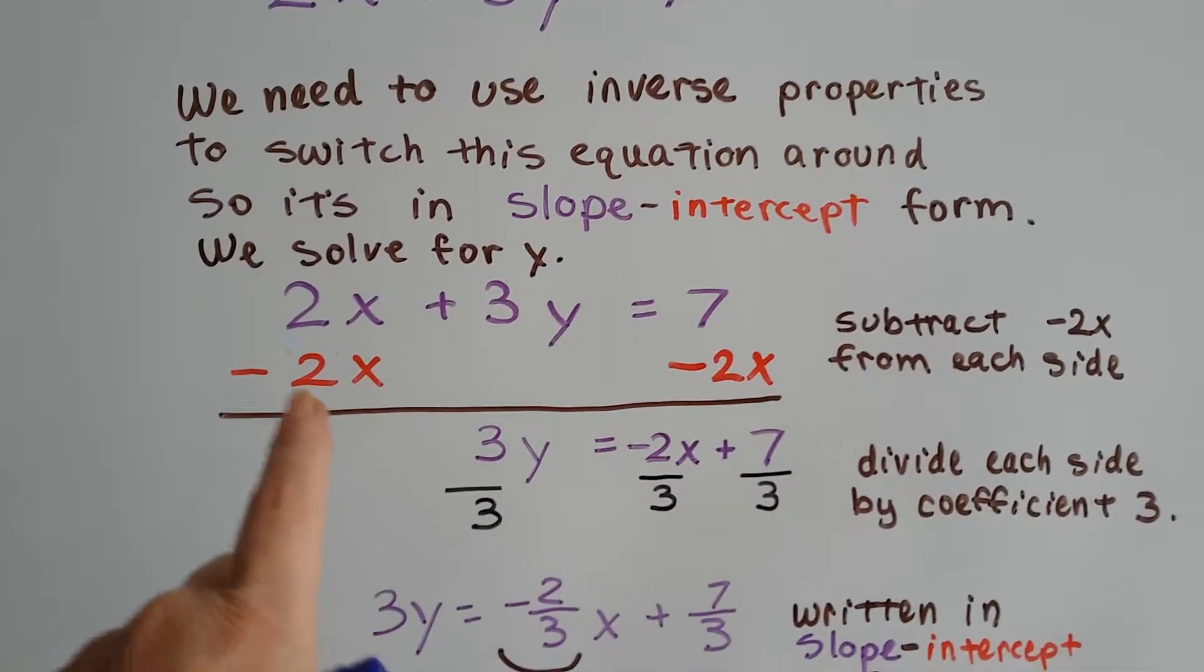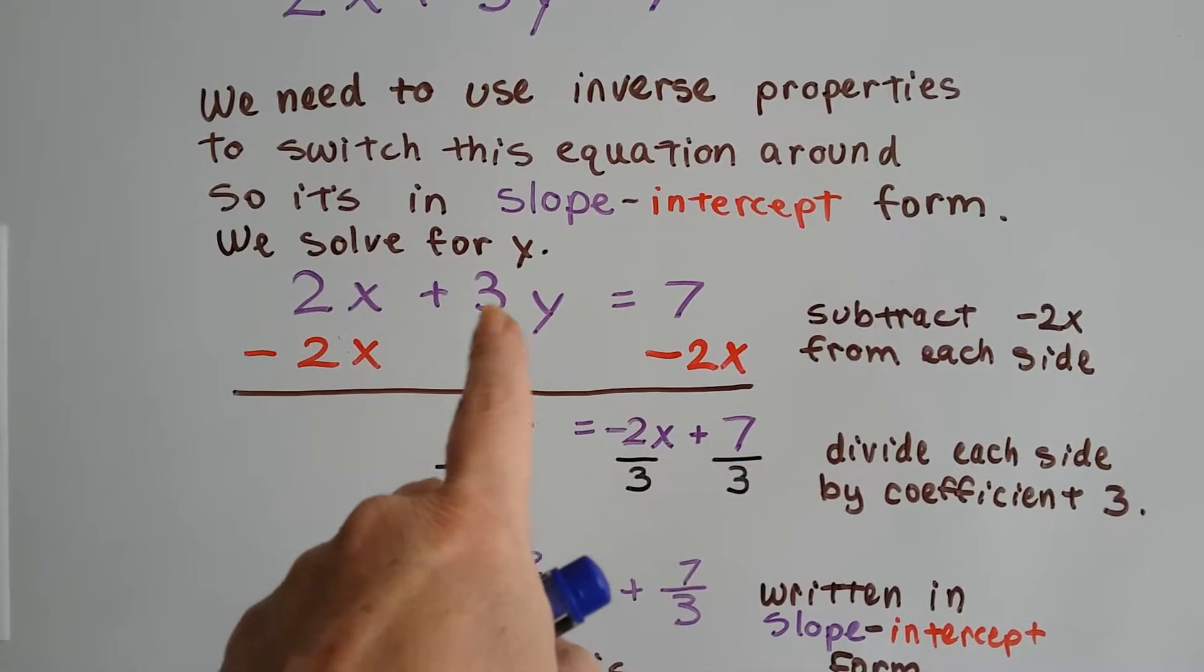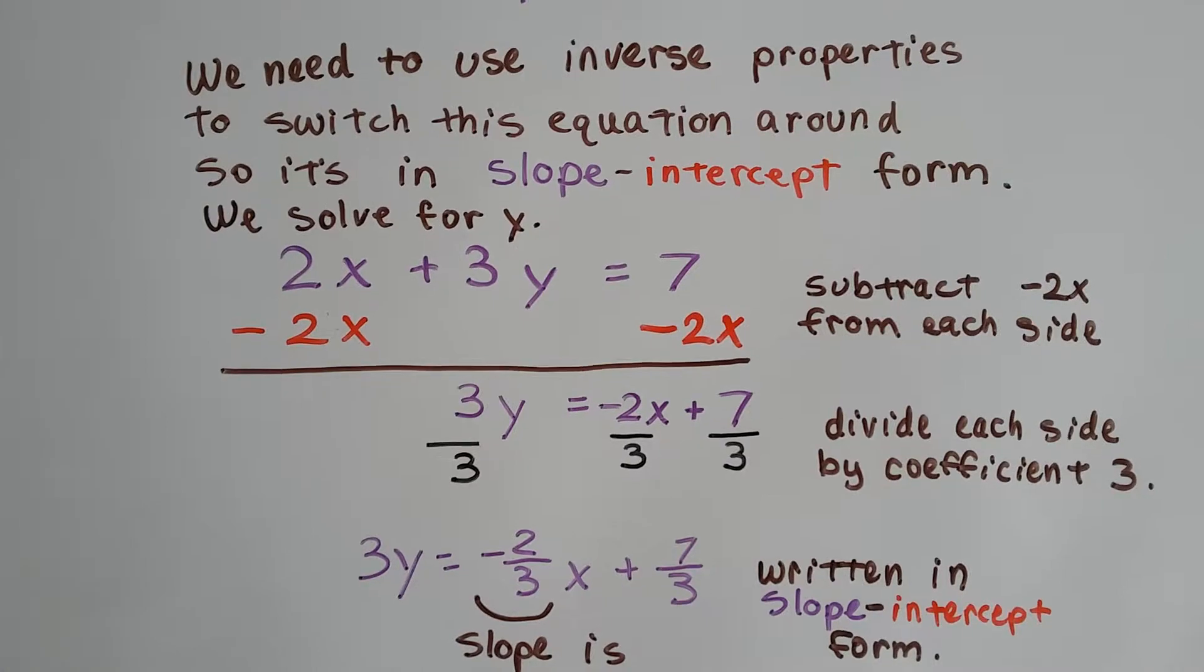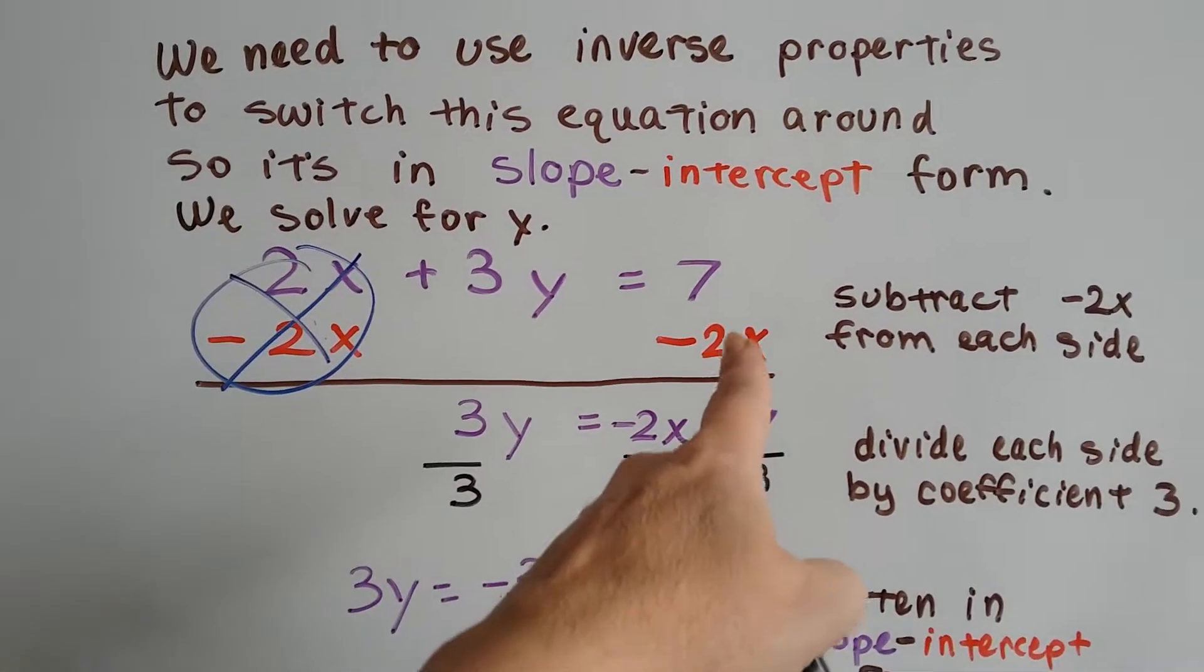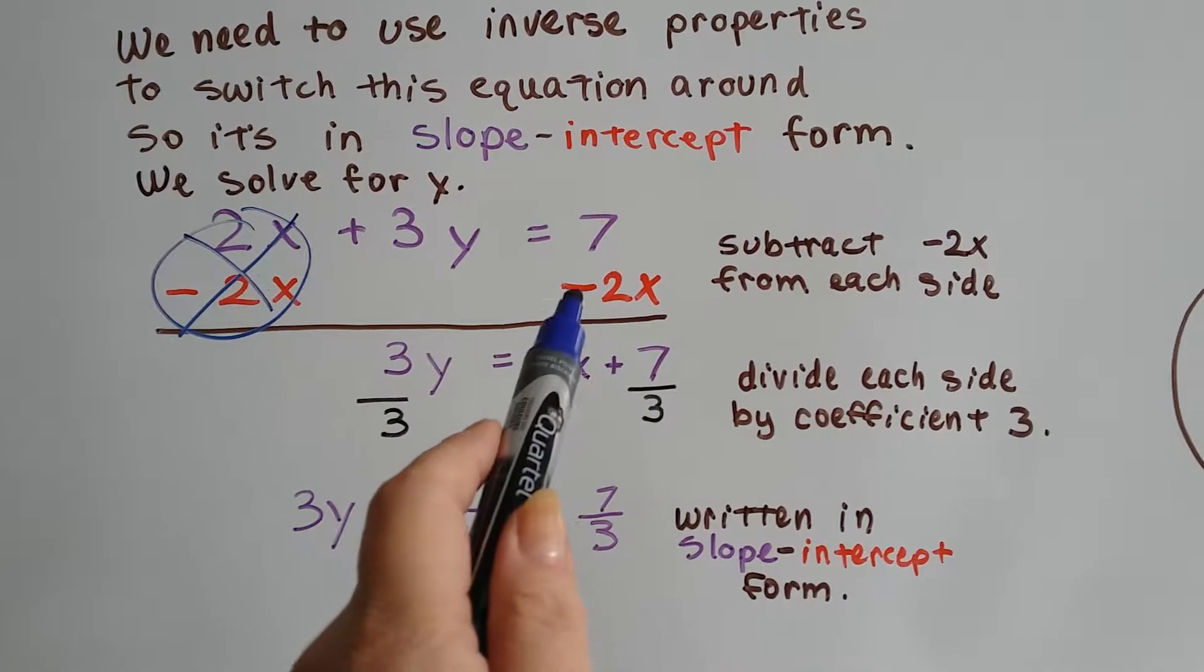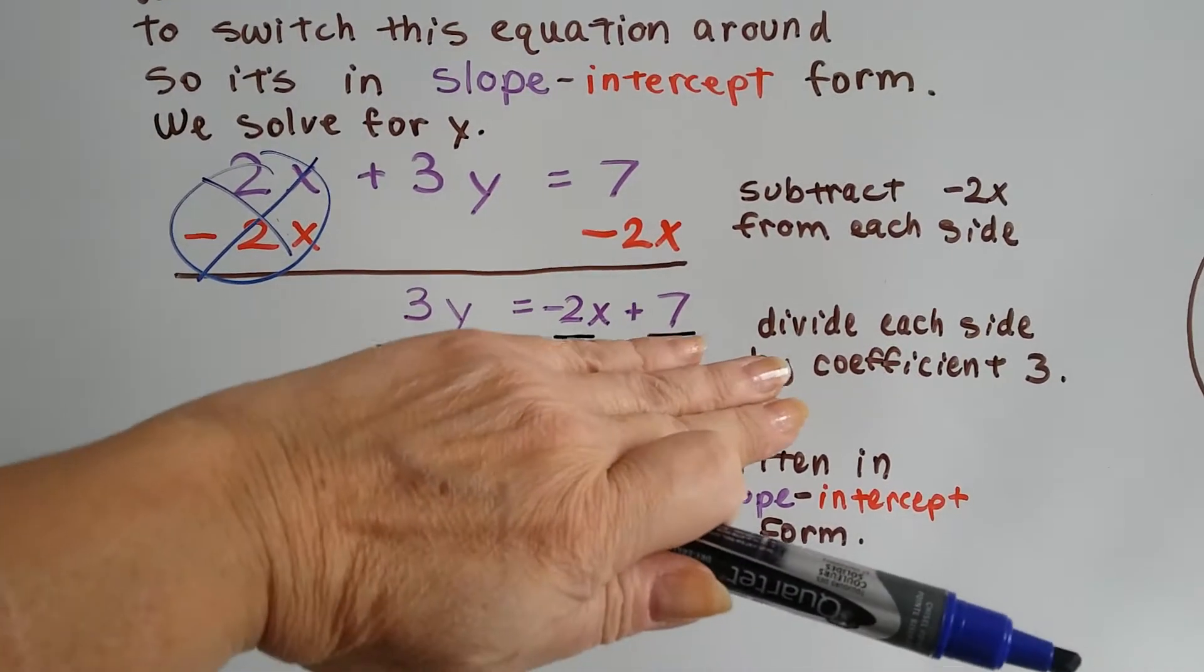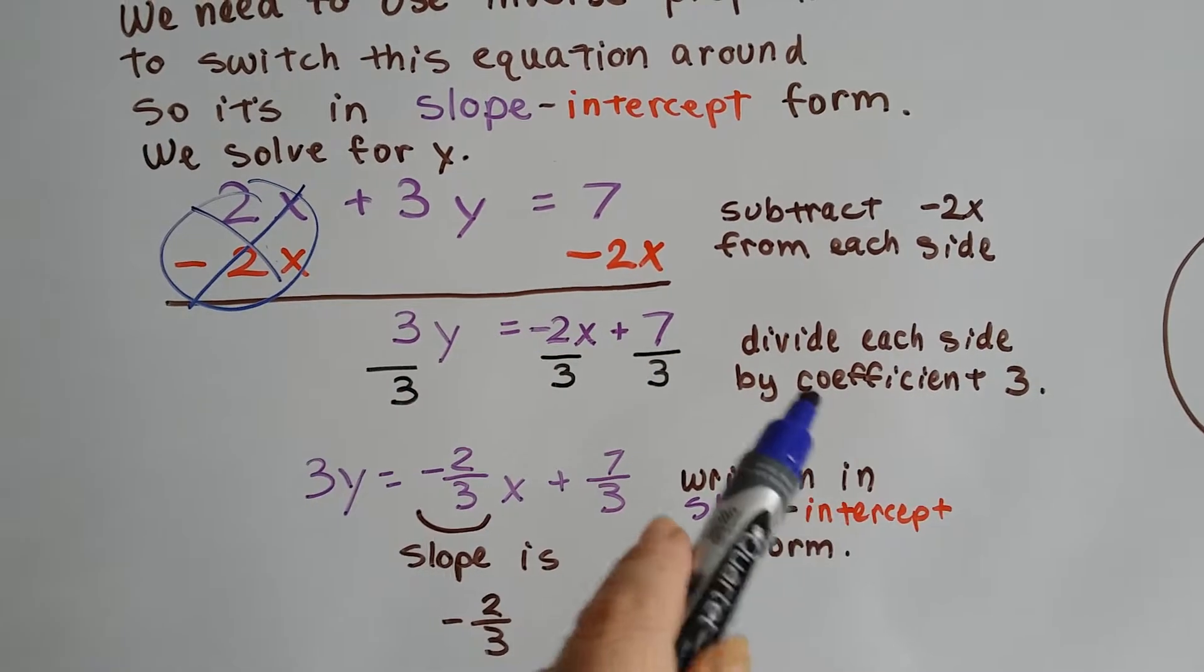So we can see that we've got 2x plus 3y equals 7. We need to get this y by itself on that side of the equal sign. So let's take away that 2x. We'll create a zero pair, and we'll cancel it out. And we subtract 2x from this side, and it becomes minus 2x plus 7. We got 3y equals minus 2x plus 7.